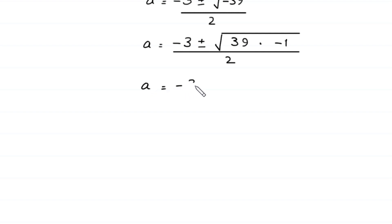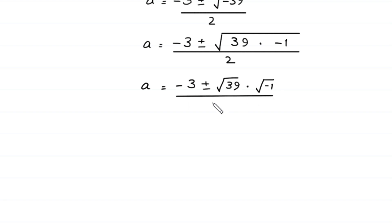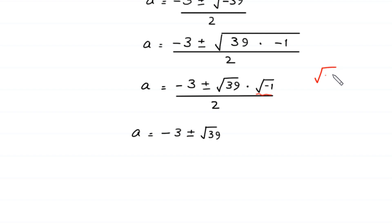The square root of negative 39 can be written as the square root of 39 times the square root of negative 1. Since the square root of negative 1 equals i, we replace it with i. So a equals negative 3 plus or minus the square root of 39 times i, divided by 2.